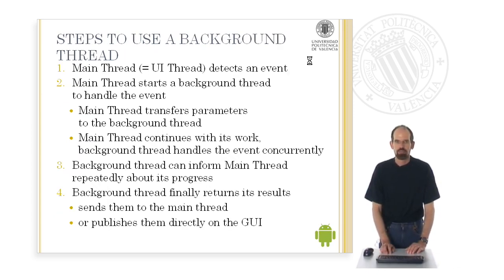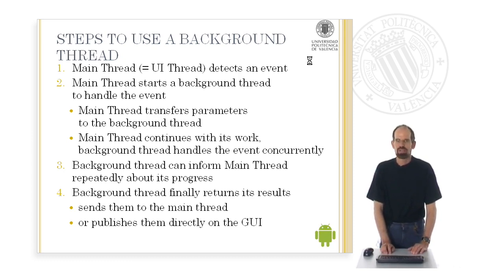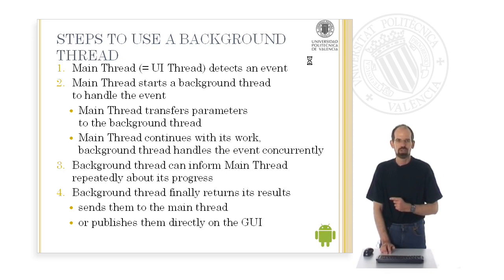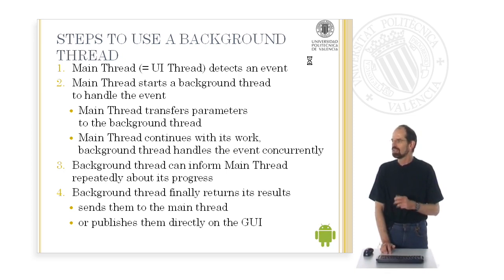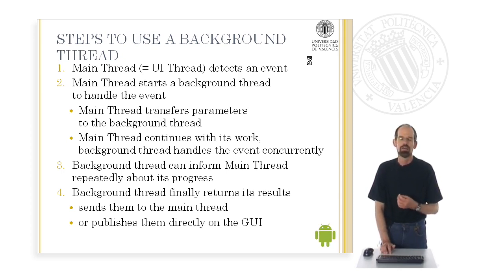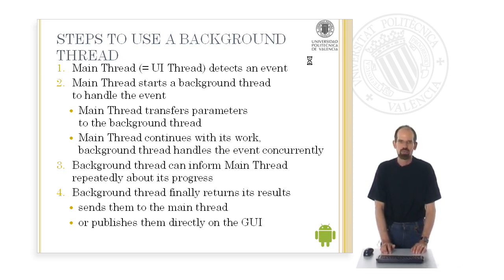What are the steps to use such a background thread? First, the user interface thread — the main thread — detects an event. In reaction to this event, the main thread starts a background thread to handle it. The main thread transfers parameters to this background thread and afterwards immediately continues with its work. The background thread handles the event concurrently to the main thread, can inform the main thread about its progress multiple times, and finally returns its results, sending them to the main thread or publishing them directly on the graphical user interface.